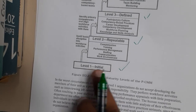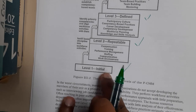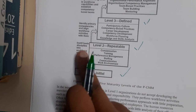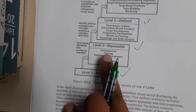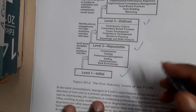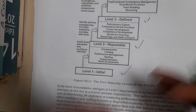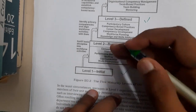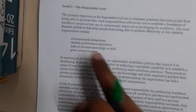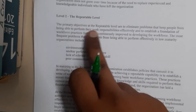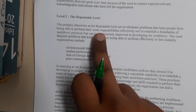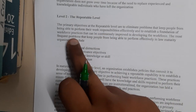From Initial, with a few modifications you can move to Repeatable. The focus areas introduced include compensative training, performance management, staffing, communication, and work environment. If you start giving proper training, you move to Level 2 — Repeatable. The primary objective at the Repeatable level is to eliminate problems that keep people from performing their work responsibilities efficiently and to establish a foundation of workforce practices that can be continuously improved.